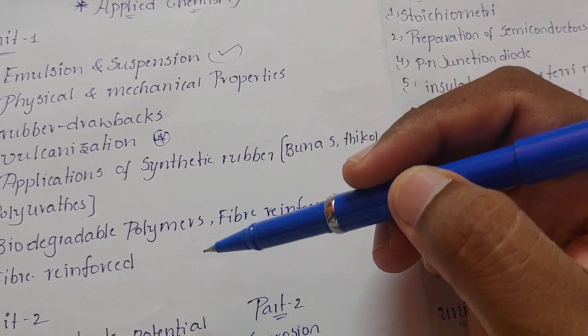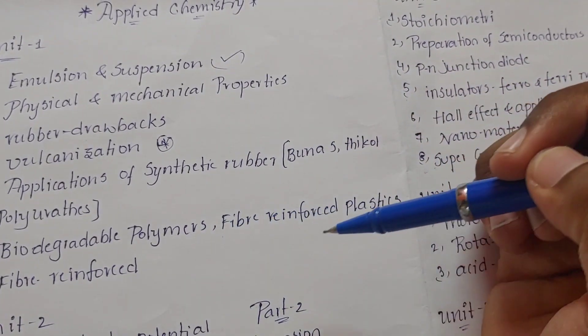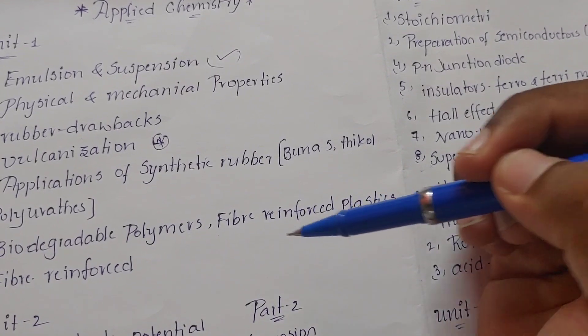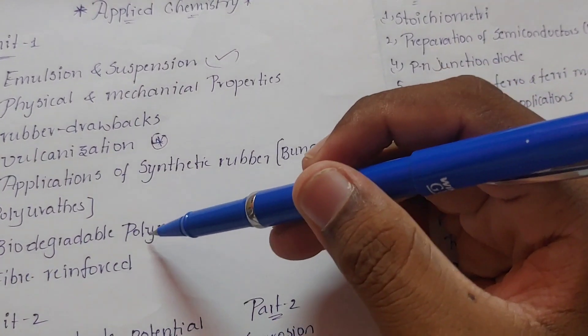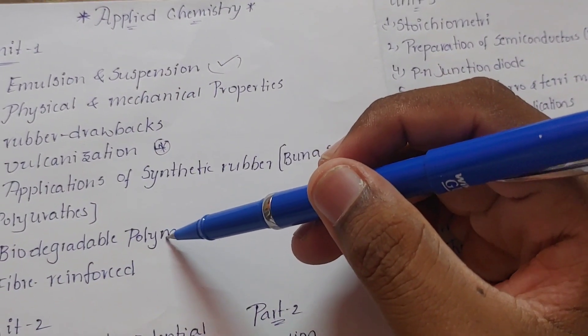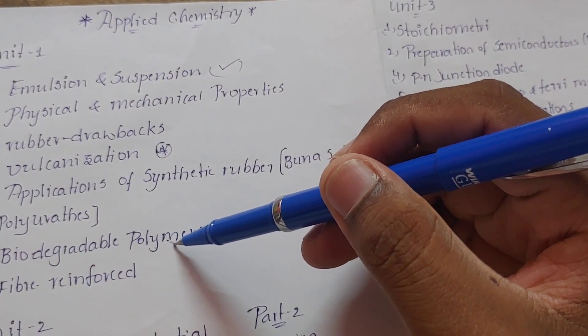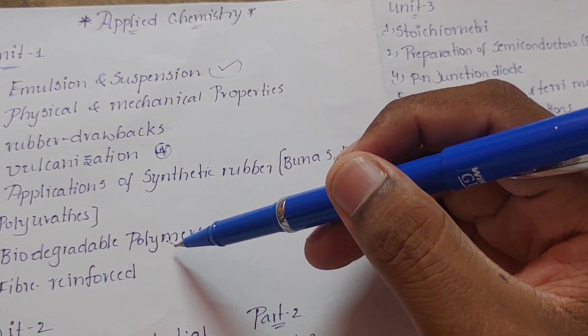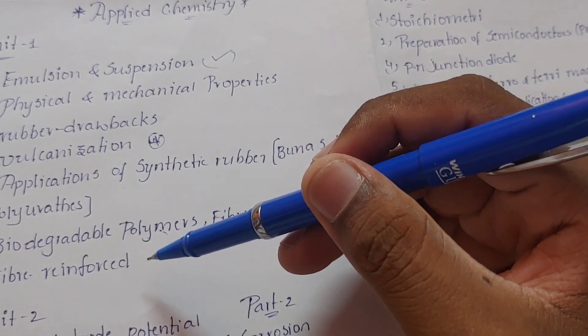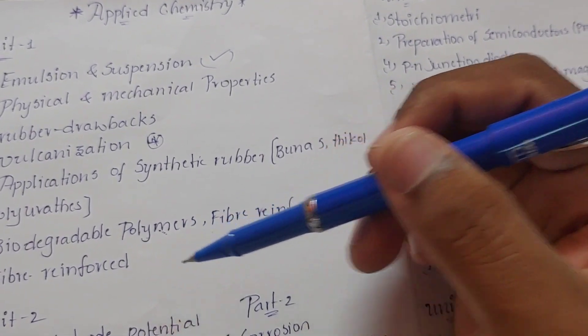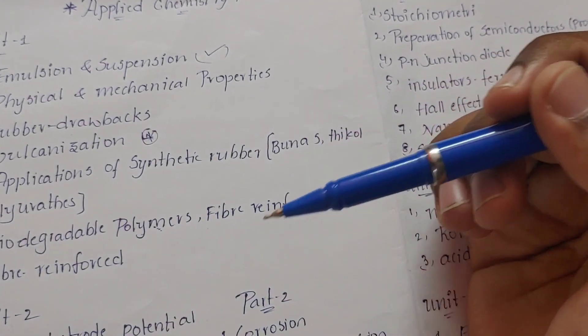This unit also covers biodegradable polymers and fiber reinforced polymers. Biodegradable polymers is an important topic, and so is fiber reinforced plastics.